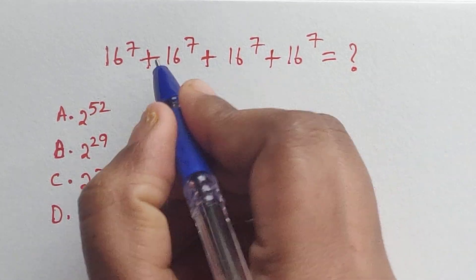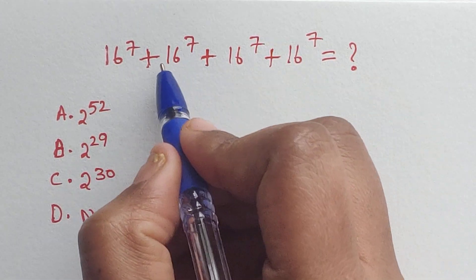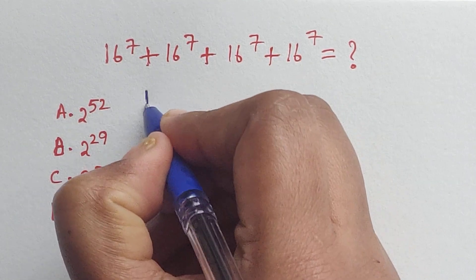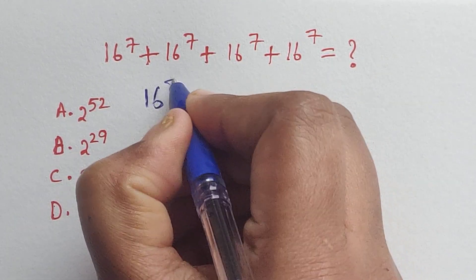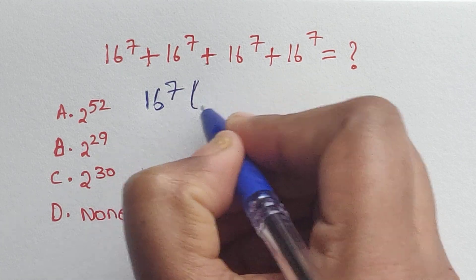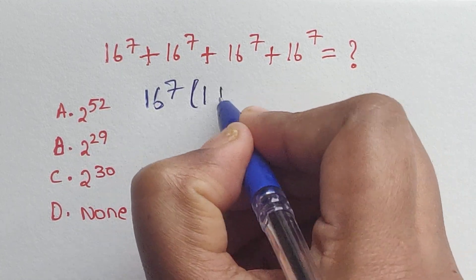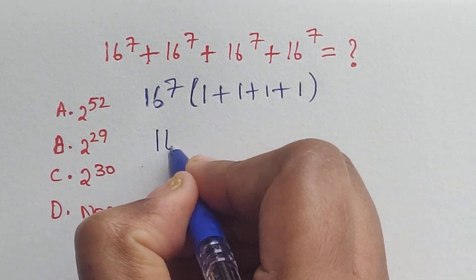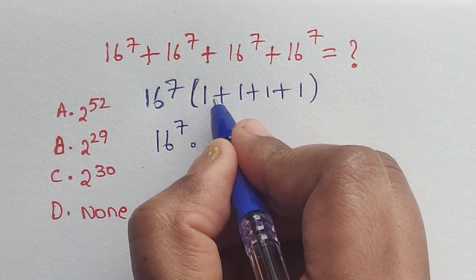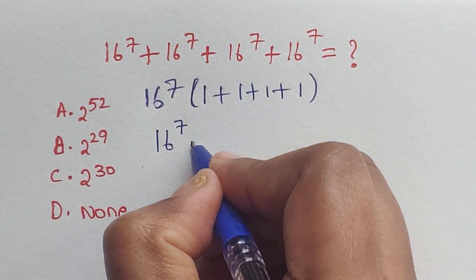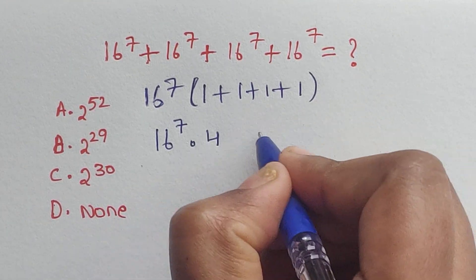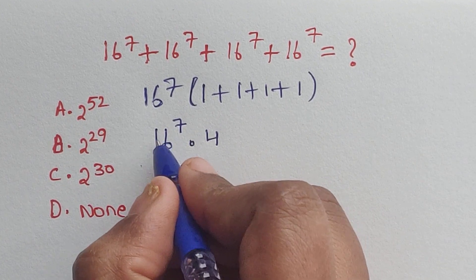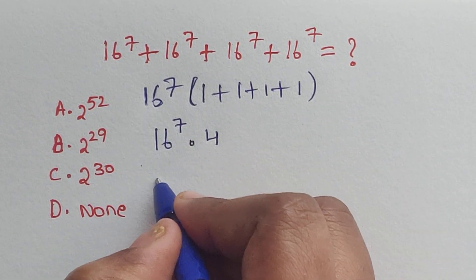So here we have four common numbers. We can take out the common factor, which is 16 to the power of 7. The leftover numbers are 1 plus 1 plus 1 plus 1, so we get 16 to the power of 7 times 4.